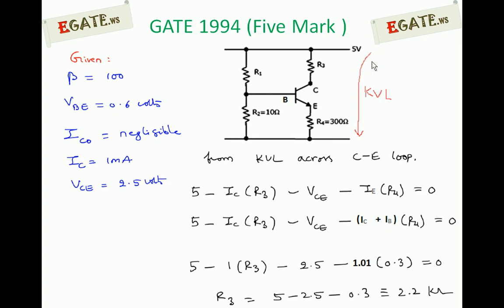Total 4 quantities we are getting in KVL: 5 volts, voltage across R3, voltage across collector-emitter, voltage across R4.